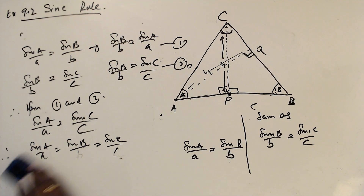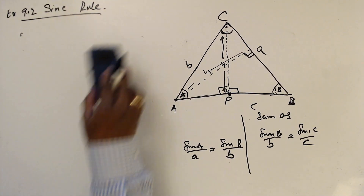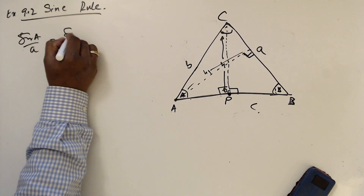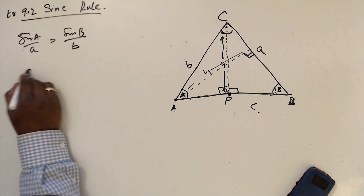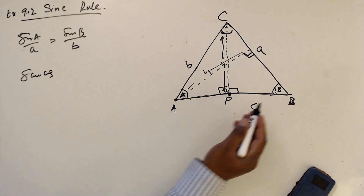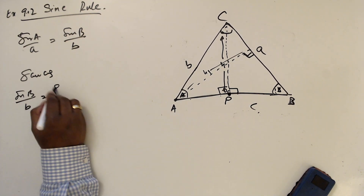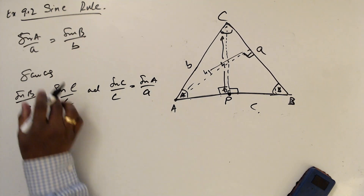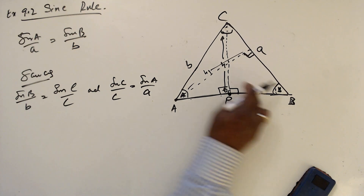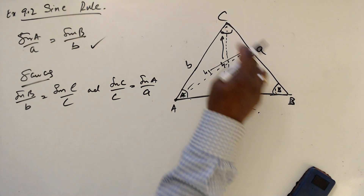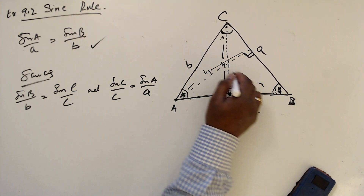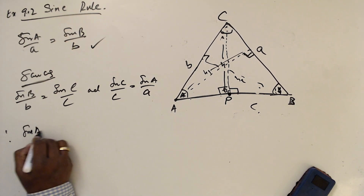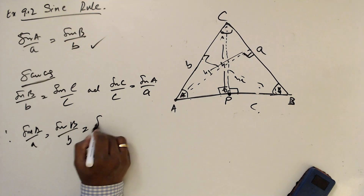So to summarize: you have already proved sine A over a equals sine B over b. Same method gives sine B over b equals sine C over c, and sine C over c equals sine A over a. We place these in the same-method category. Hence sine A over a equals sine B over b equals sine C over c — proved.